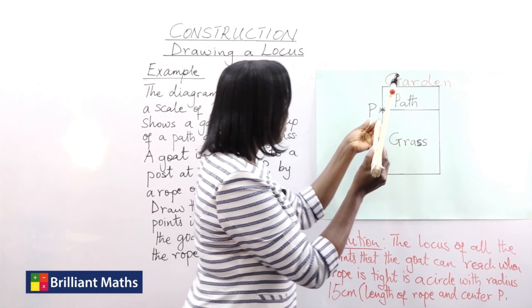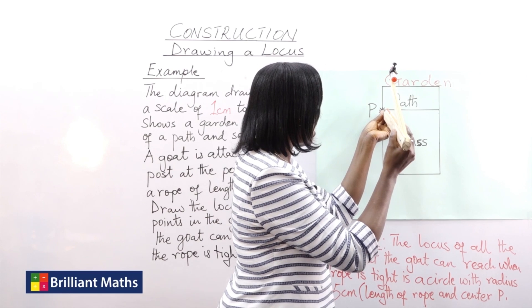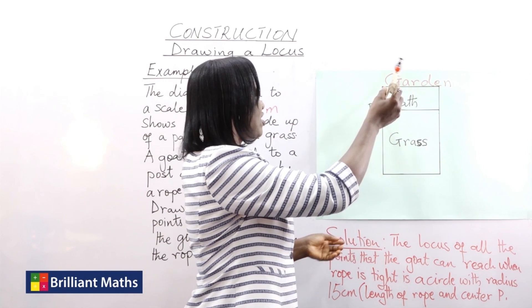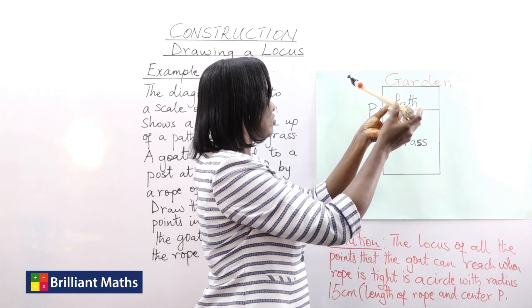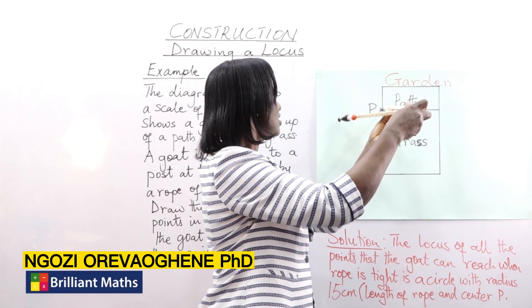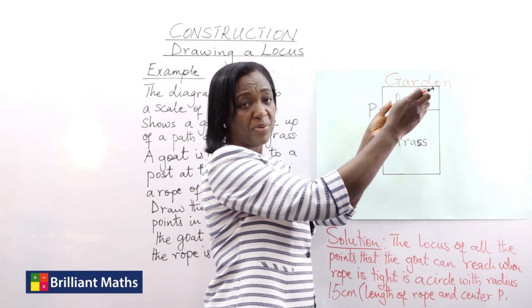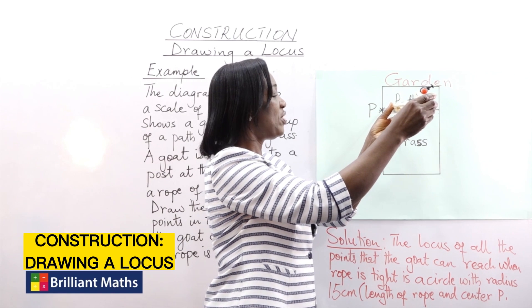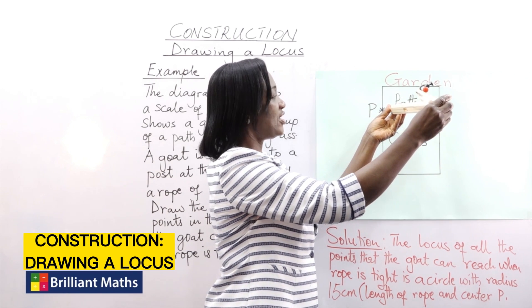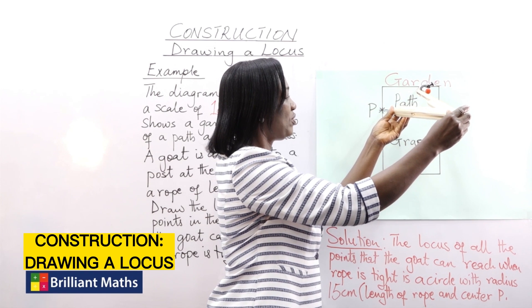we are not going to have the entire circle. It will just be radius 15 centimeters within the garden. So that's where the goat is tied. So ordinarily the goat can go around like this all round, but for the purpose of this question it's just going to be within the garden.